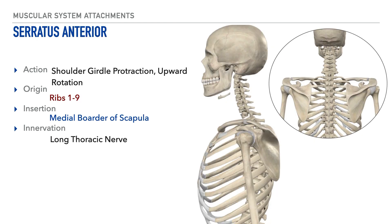Next is the serratus anterior, and its actions include shoulder girdle protraction and upward rotation. It originates on ribs 1 through 9, and we'll show those origin points here. Its insertion is on the medial border of the scapula, and we'll show that insertion point here. Lastly, its innervation is the long thoracic nerve.